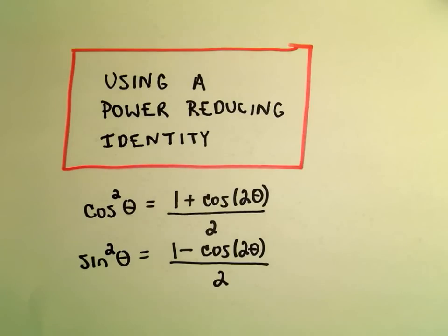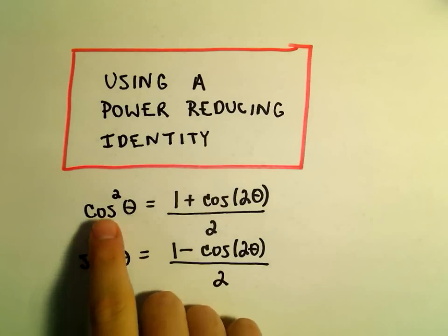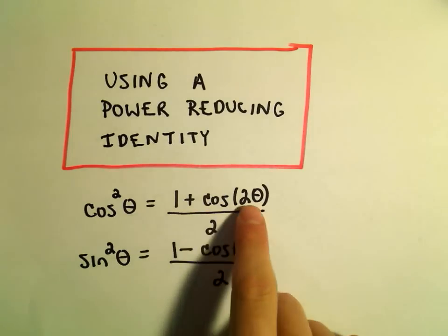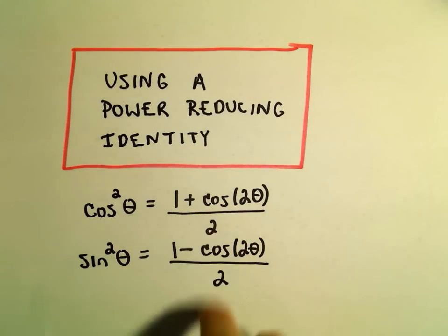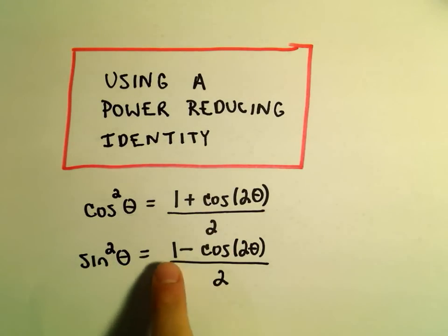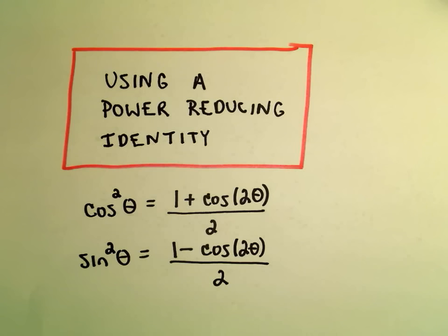In this video we're going to simplify some expressions and basically try to reduce the powers. A couple of identities that are useful: cosine squared of theta equals 1 plus cosine of 2 theta over 2, and sine squared of theta is 1 minus cosine of 2 theta over 2.